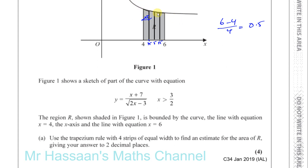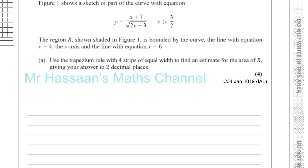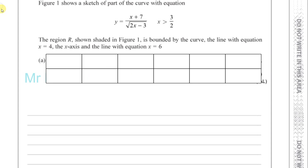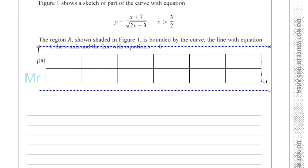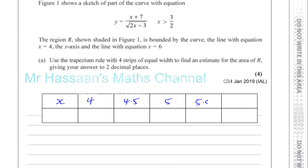It won't be exactly the same but it's a good approximation. So we have to put in x equals 4, 4.5, 5, 5.5, and 6 into this equation, see what y comes out with, and then use that to work out our approximate area. I'm going to make a little table with x and y, and I'll need 5 ordinates.